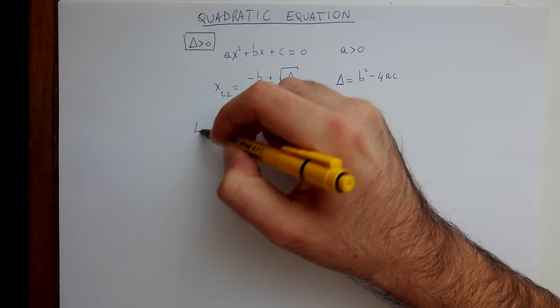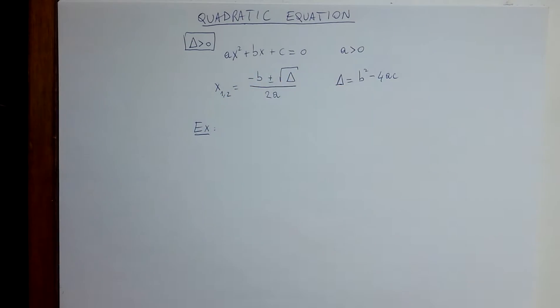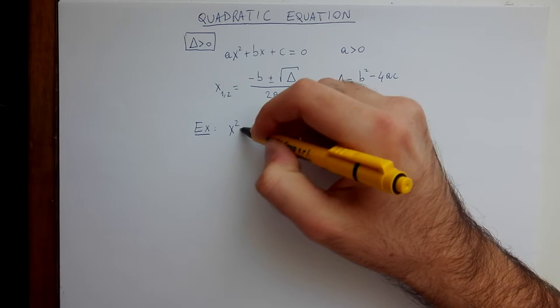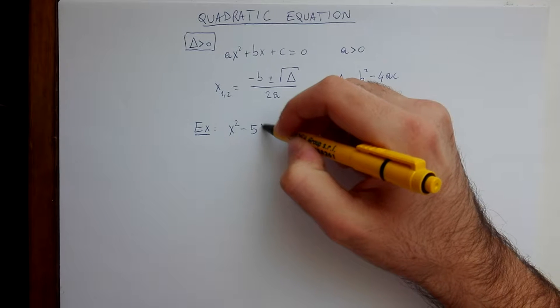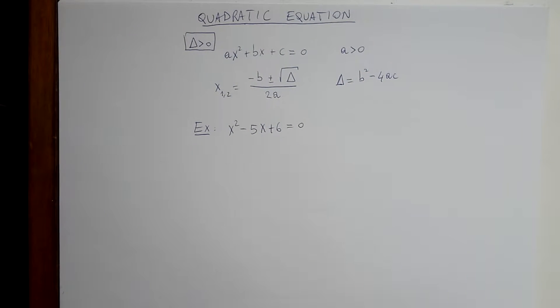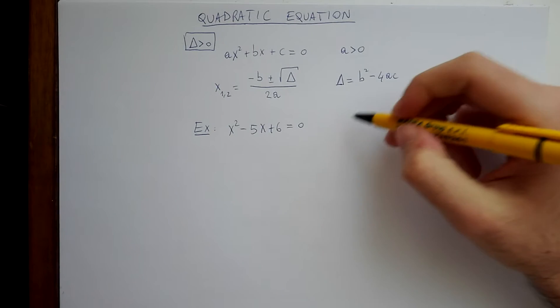Let's see an example. So consider the equation x squared minus 5x plus 6 equals zero. Let's write who a, b and c are.